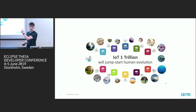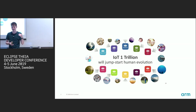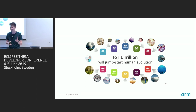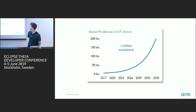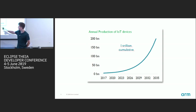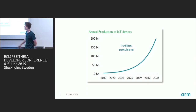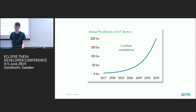What ARM does is design the architecture, and then we work very closely with our partners who actually distribute the microcontrollers based on our architecture. On this slide we can see what we are aiming for: there's a plan to have one trillion connected devices by the year 2035. We don't have much time — it's around 16 years from now. The cumulative number of connected devices is planned to reach one trillion.